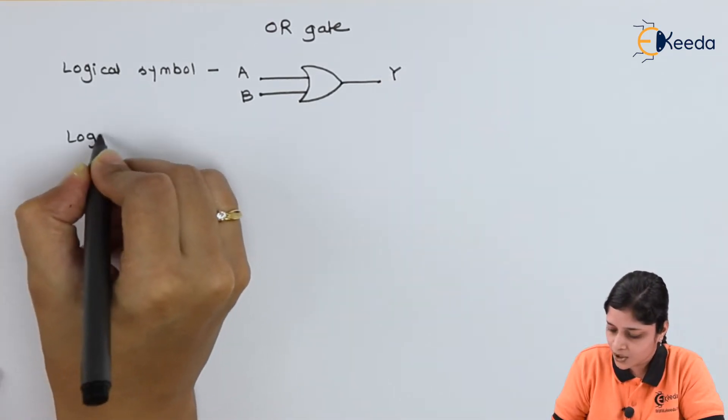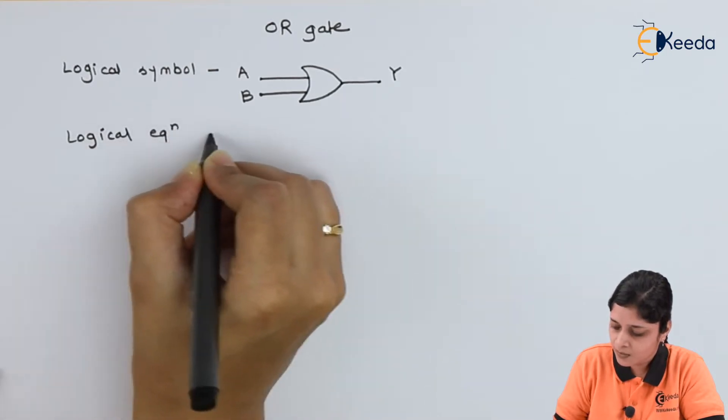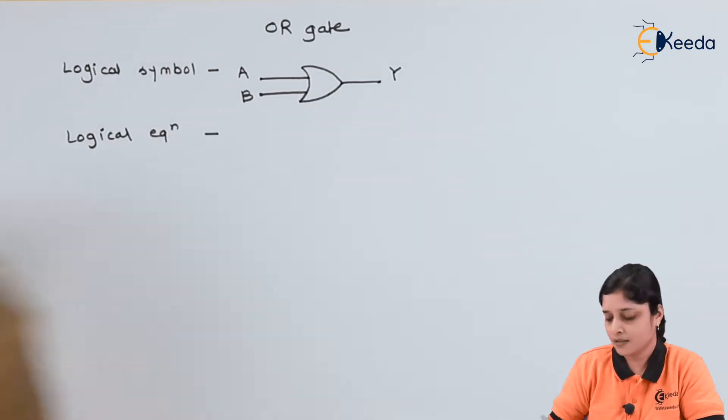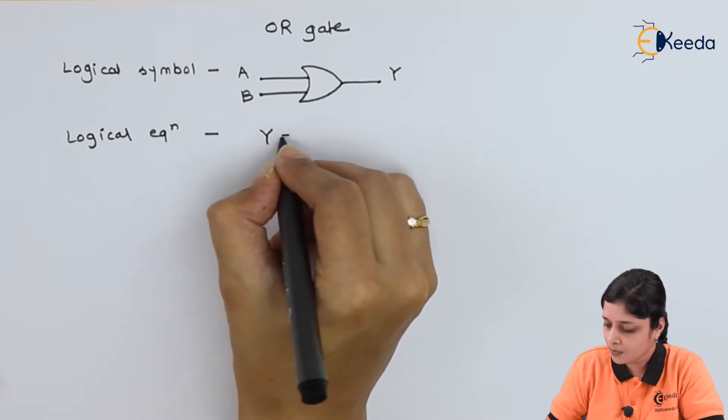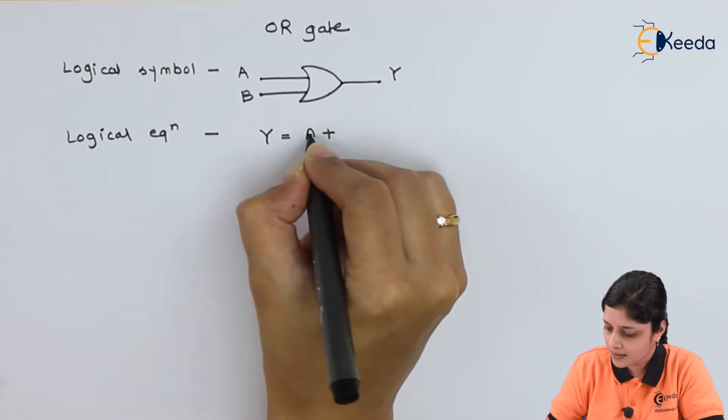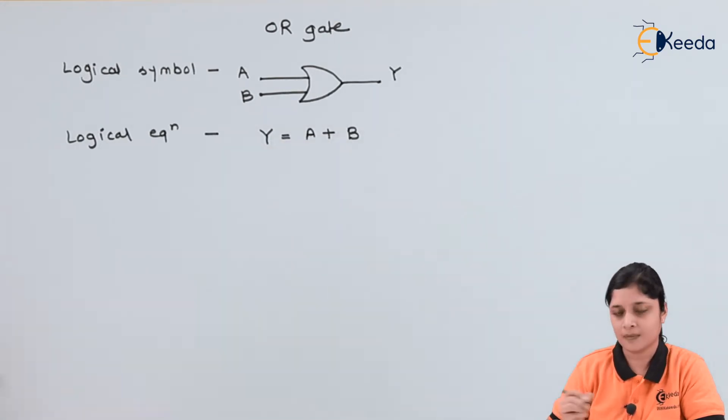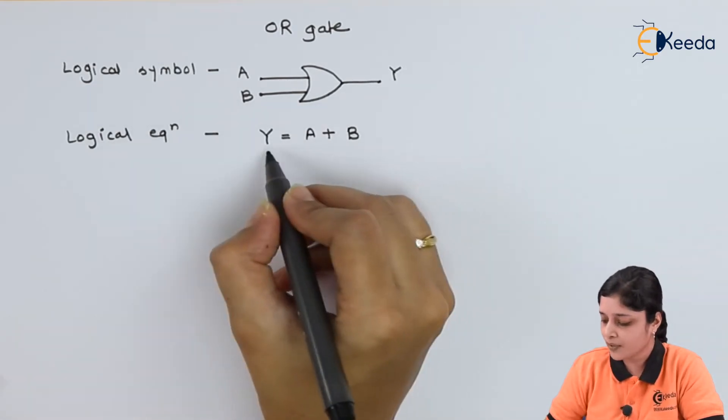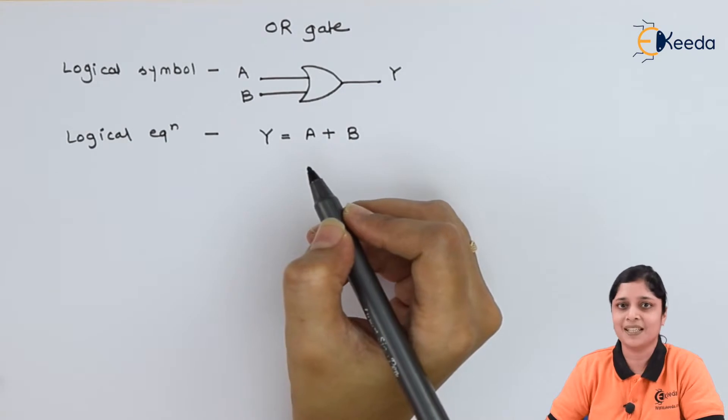The logical equation for OR gate is Y equals to A plus B. Here logical addition is performed, that's why Y = A + B.